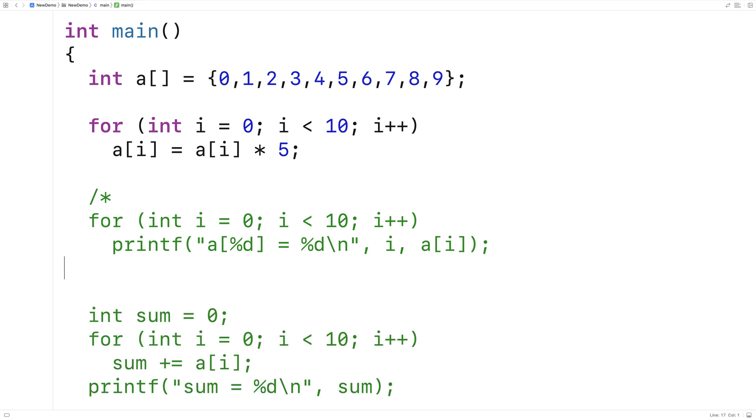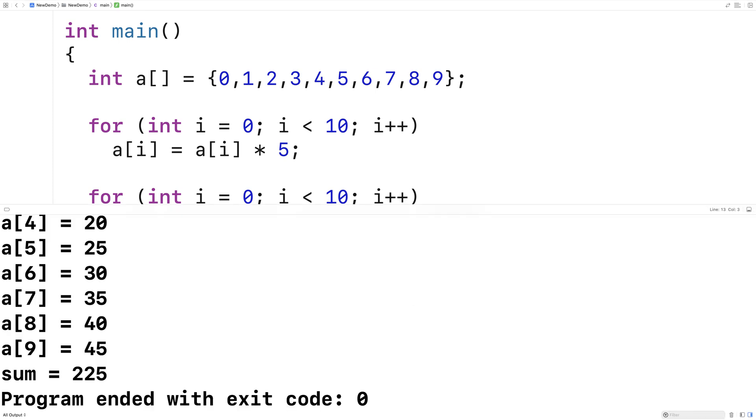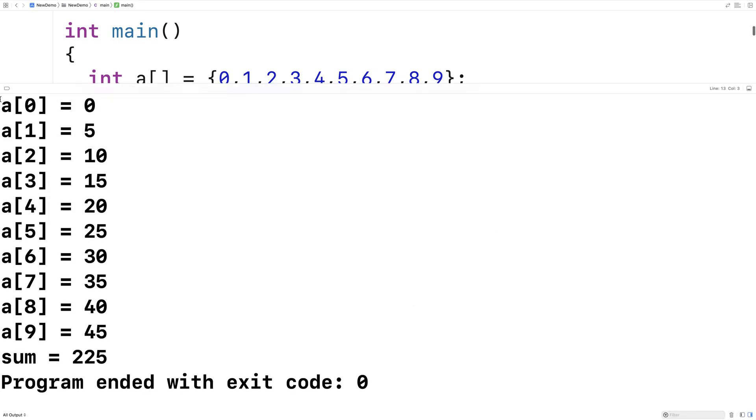There's a technique we can use to activate and deactivate segments of code like this that are intended for debugging. Right now, if I were to run the program, we are going to get the output of the array elements. We get all the array elements from 0 to 9 output because that for loop is running.